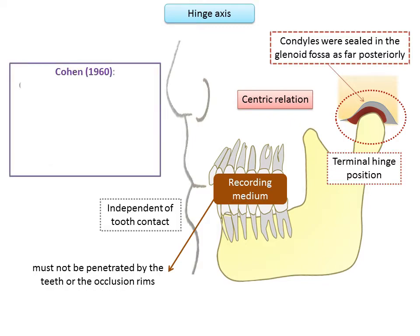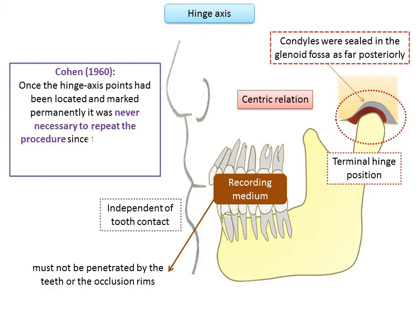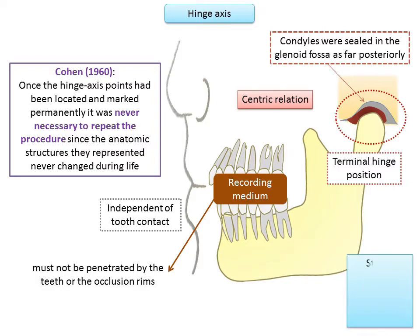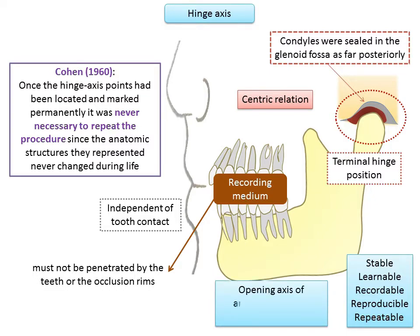Cohen further stated that once the hinge axis points had been located and permanently marked, it was never necessary to repeat the procedure, because these hinge axis points correlate to anatomic structures which do not change during life. Therefore, hinge axis points are not variable. Similar to centric relation, hinge axis can be described as a stable, learnable, recordable, reproducible, and repeatable position. It is used as an important reference for mounting casts in the articulator so that the opening axis of the articulator coincides with the terminal hinge axis of the patient.